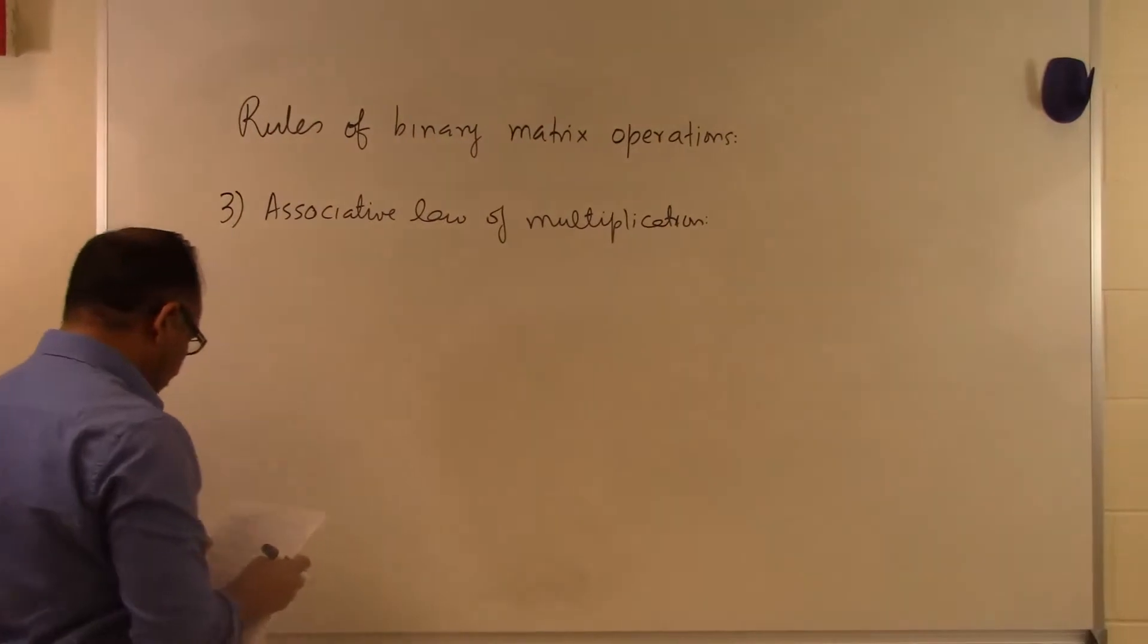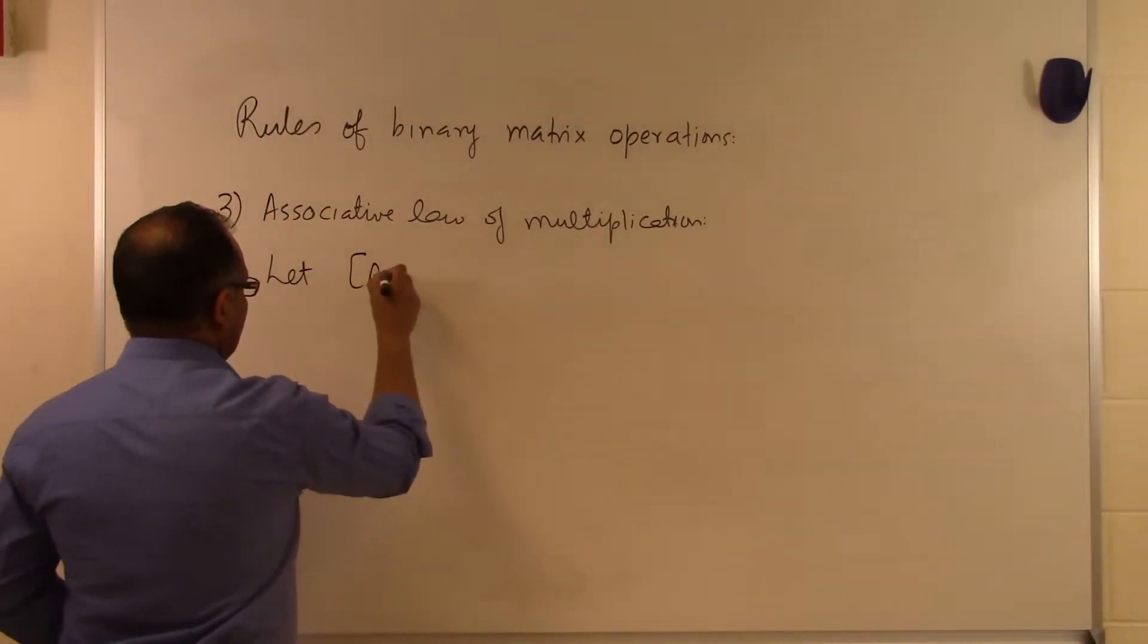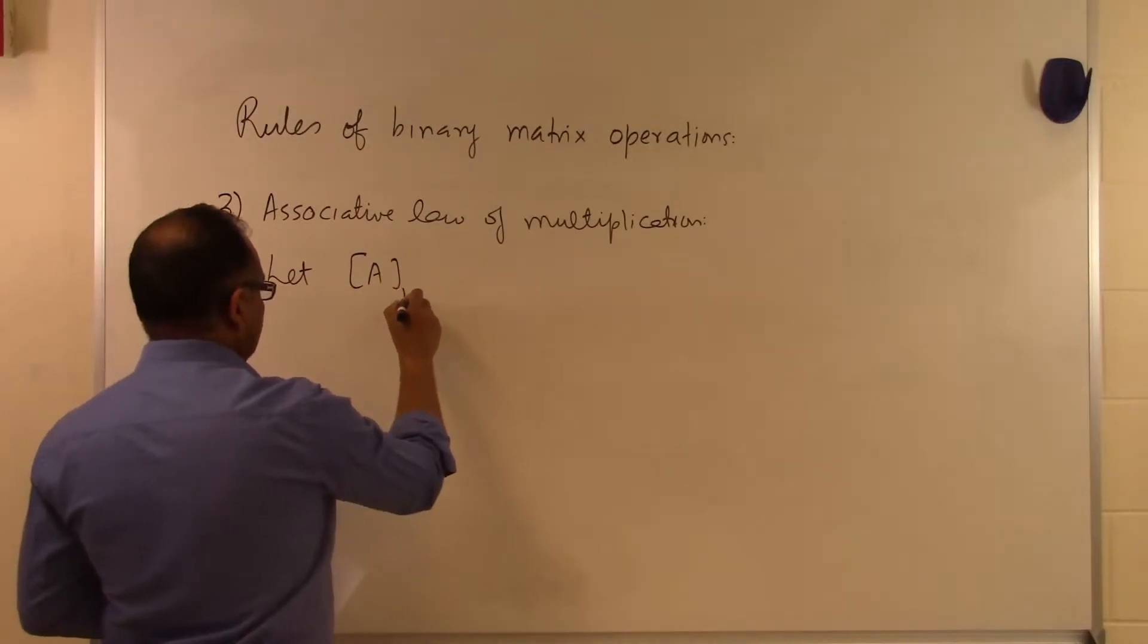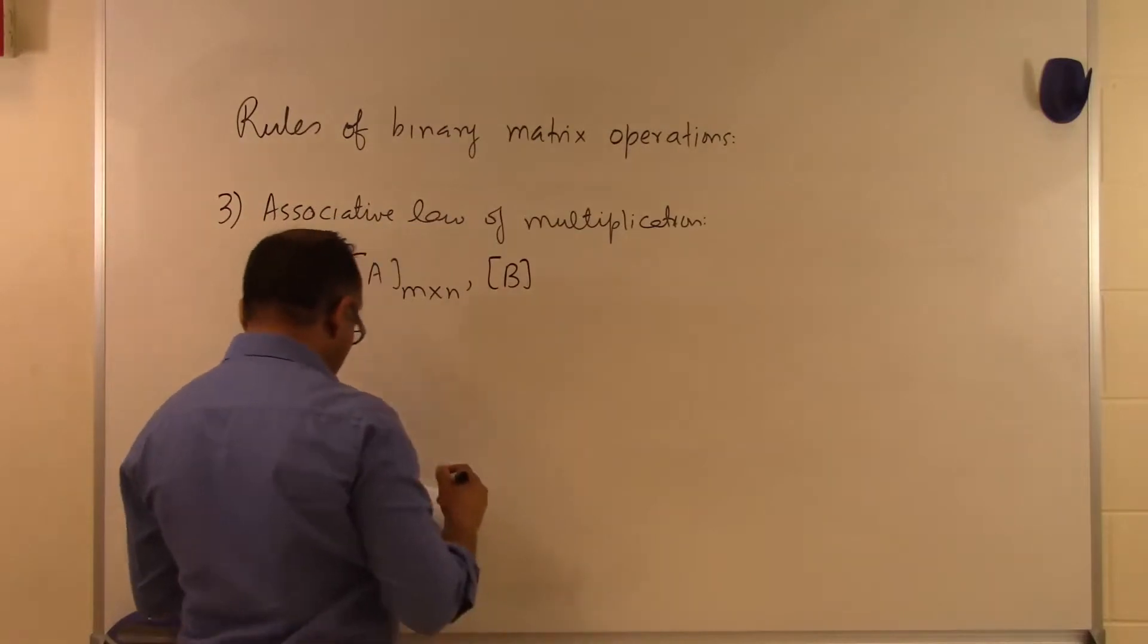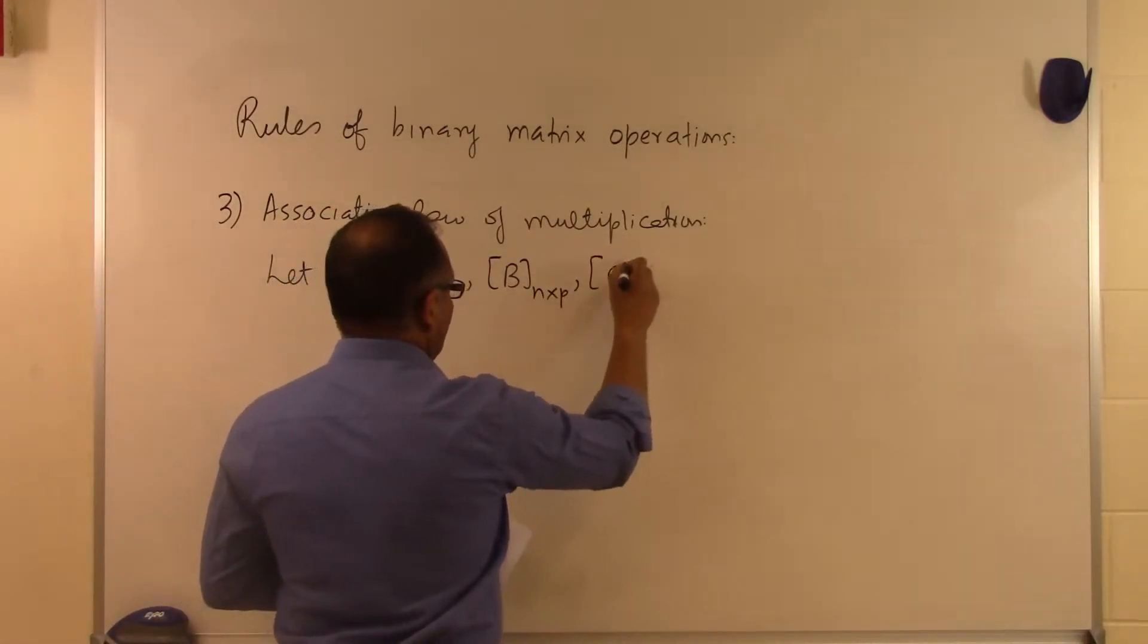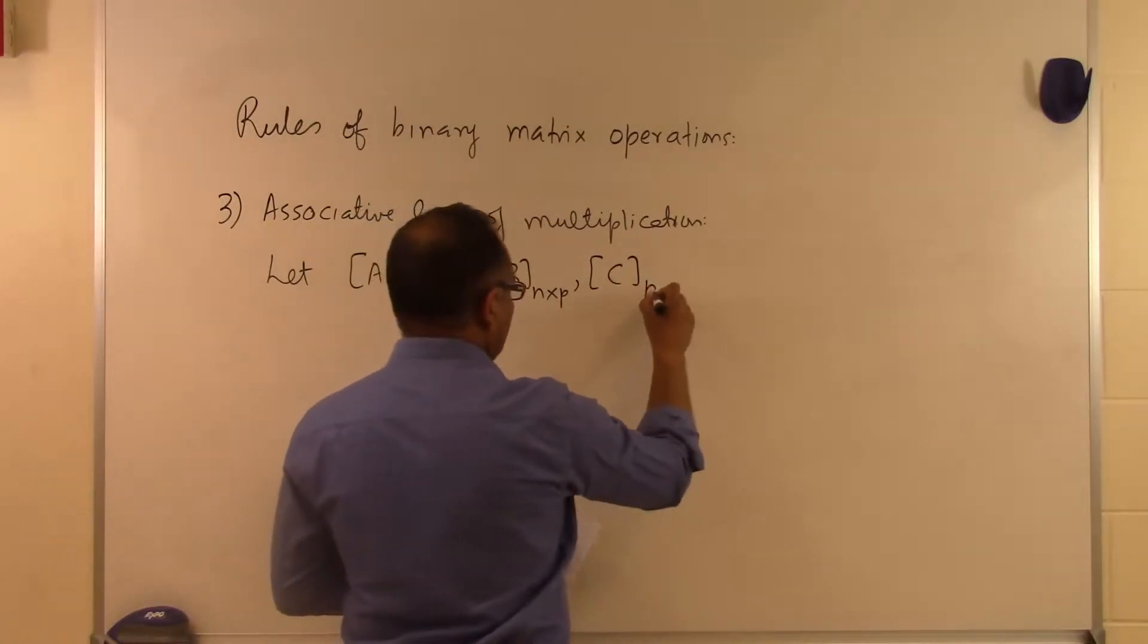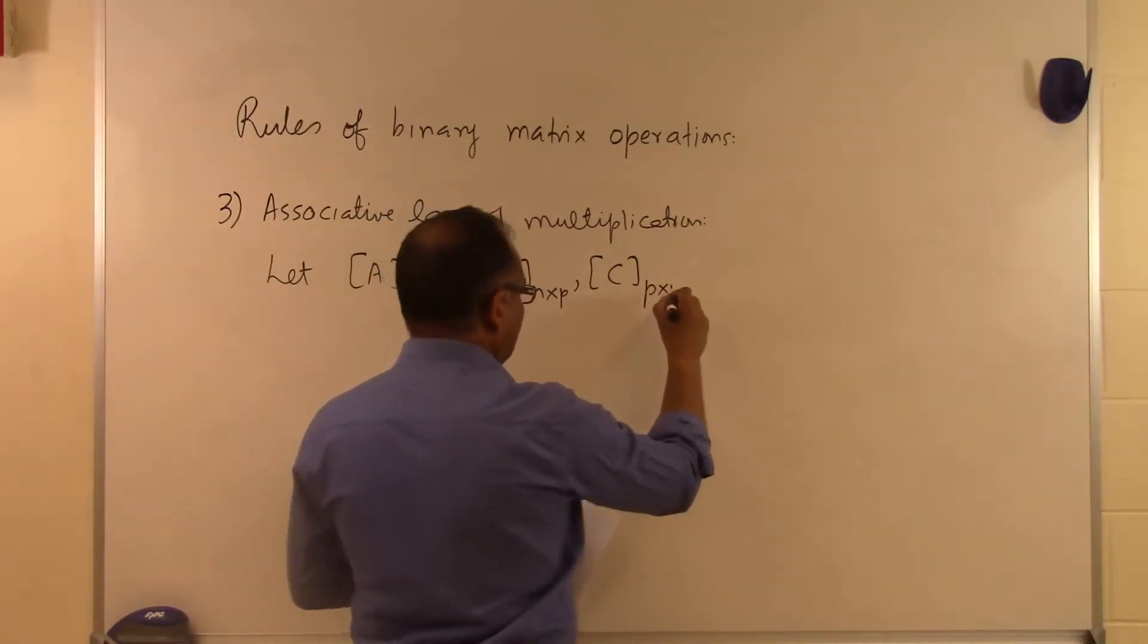What the associative law of multiplication is, is that let there be an A matrix, and let's suppose this is M rows and N columns. Then B is N rows and P columns. And C then has P rows and let's suppose R columns.